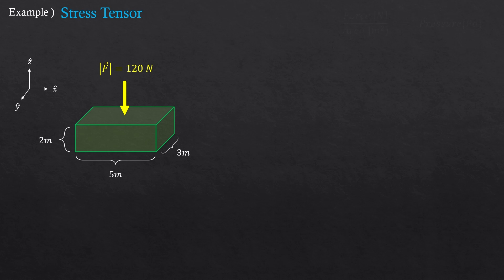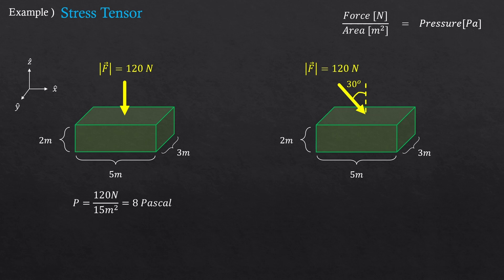One nice example of tensors is a stress tensor from fluid dynamics. Let's look at this box. You know, perpendicular force over area is pressure, right? Then what is the pressure given on this box? 120 newtons divided by 15 meters squared. So 8 pascals. It's just high school stuff. But what if the force was not perpendicularly applied to the surface? We'll have to only consider the normal component of the force, right?